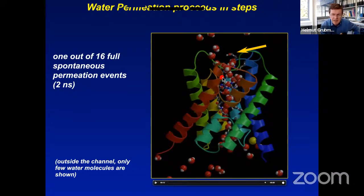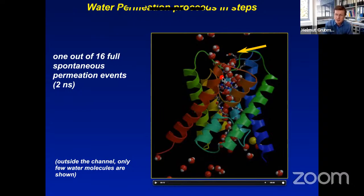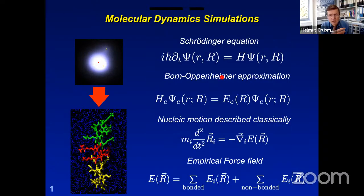After a while we have what we call a trajectory — the position of every single atom over time, typically nanoseconds up to many microseconds these days. That's the main limitation: we can hardly simulate seconds or minutes. For our water channel, you can follow a single water molecule passing through nicely. Then comes an important step: we compare to experiment to check accuracy. In this case we can measure how much water goes through the aquaporin in terms of permeabilities, and if that agrees we can proceed.